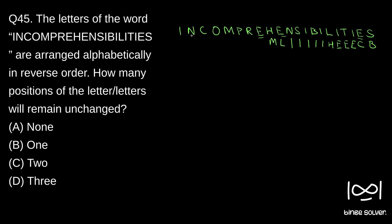There are how many N's? 1, 2 — 2 N's. There is 1 O. There is 1 P. There is 1 R. There are 2 S's. There is 1 T.